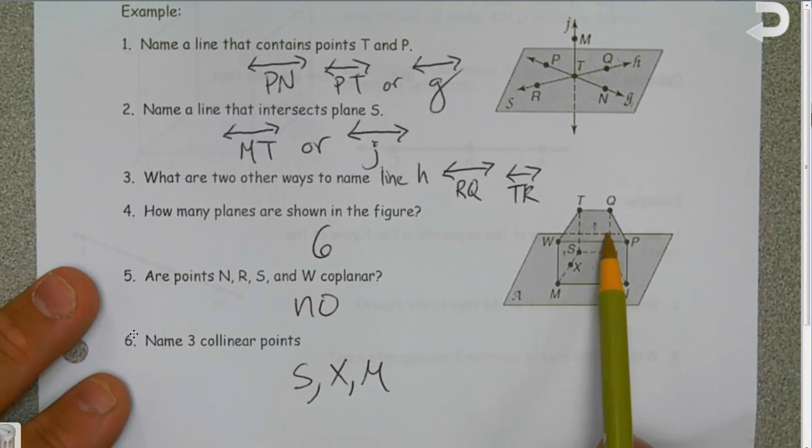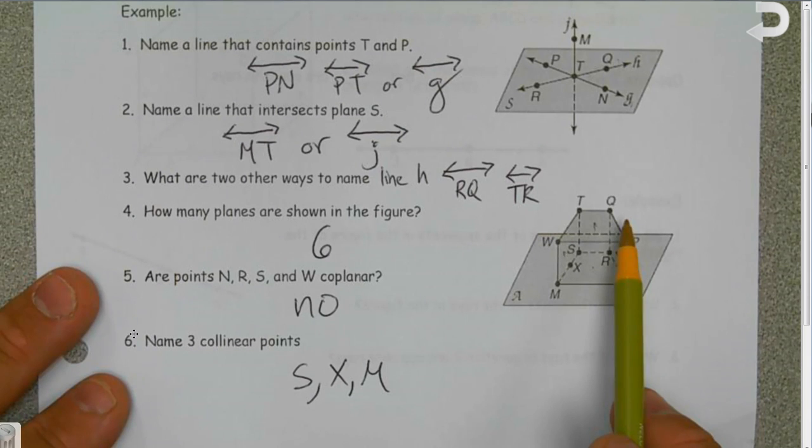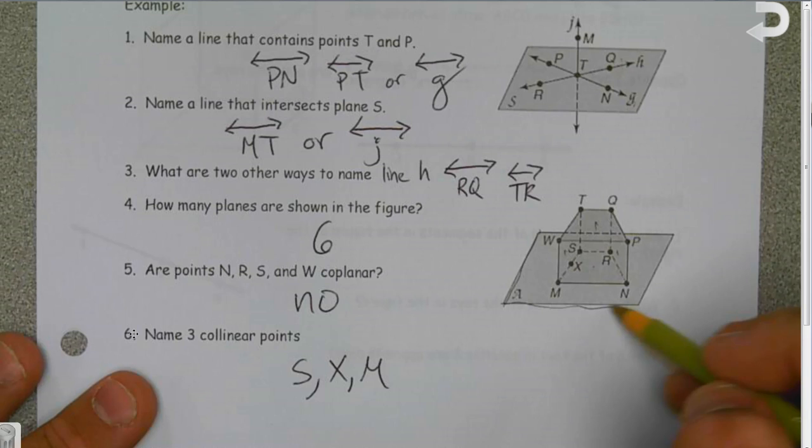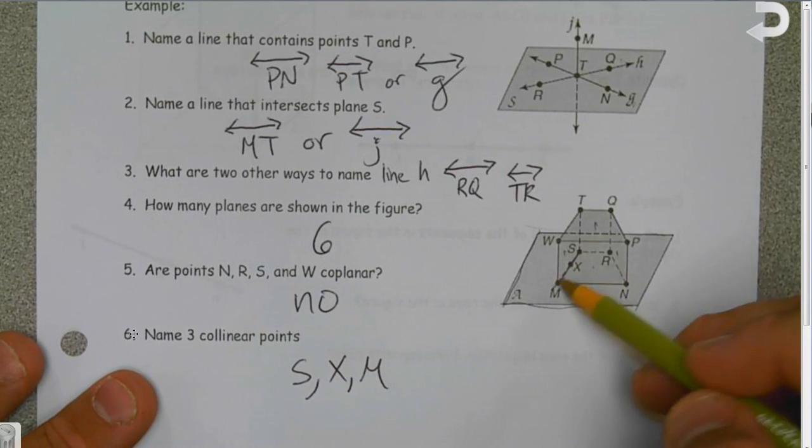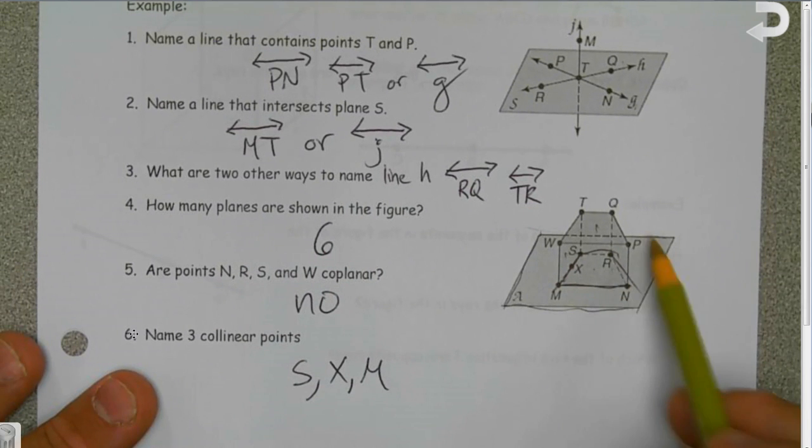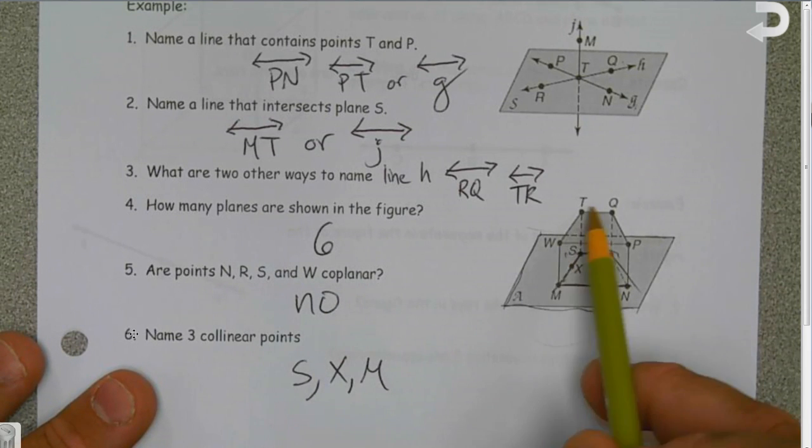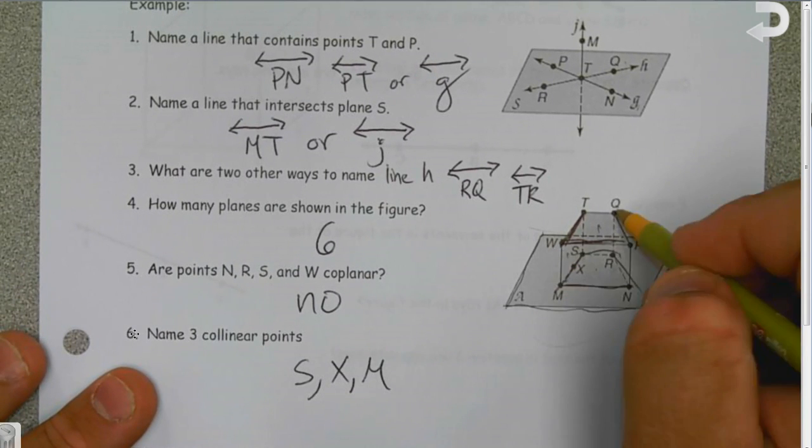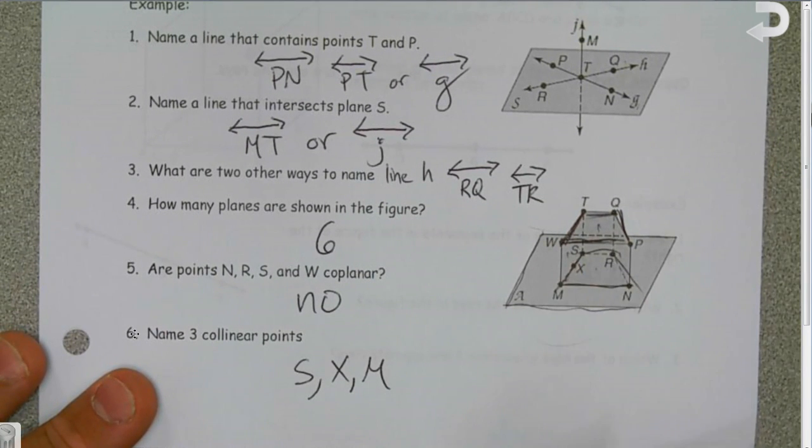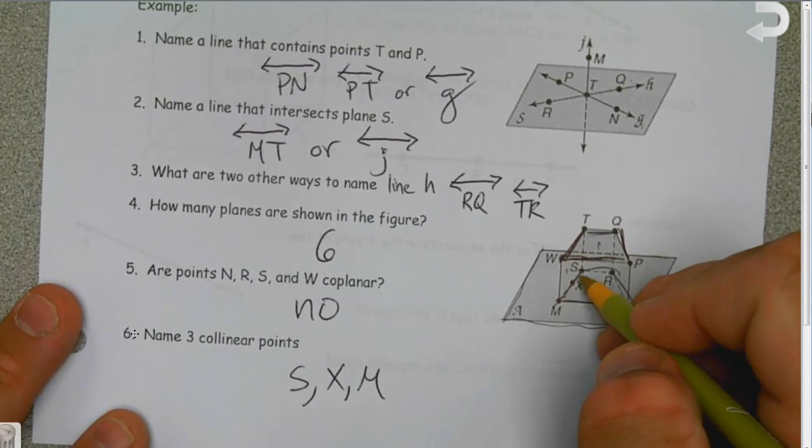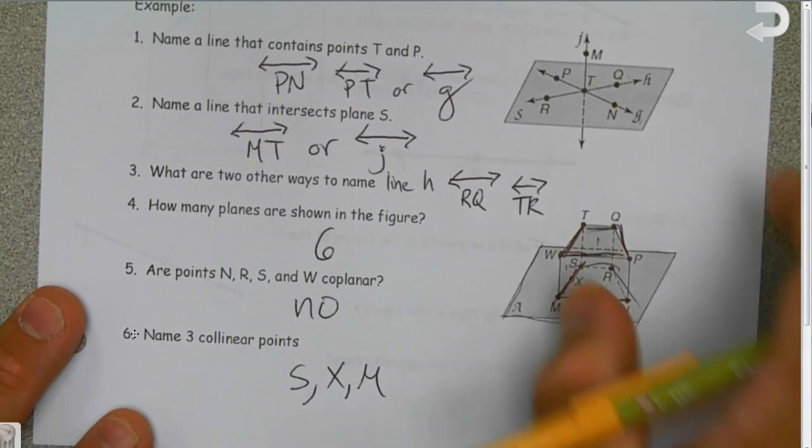Question four: how many planes are shown in the figure? This is a cube. A cube is made up of six sides, and so there are six planes in this figure. I'm sure you're saying, well wait a minute, what about this big plane down here? This plane is part of the bigger plane. Question five: are N, R, S, and W coplanar? Well, if you notice, W is on the plane up top, so W is not in line with N, R, and S.